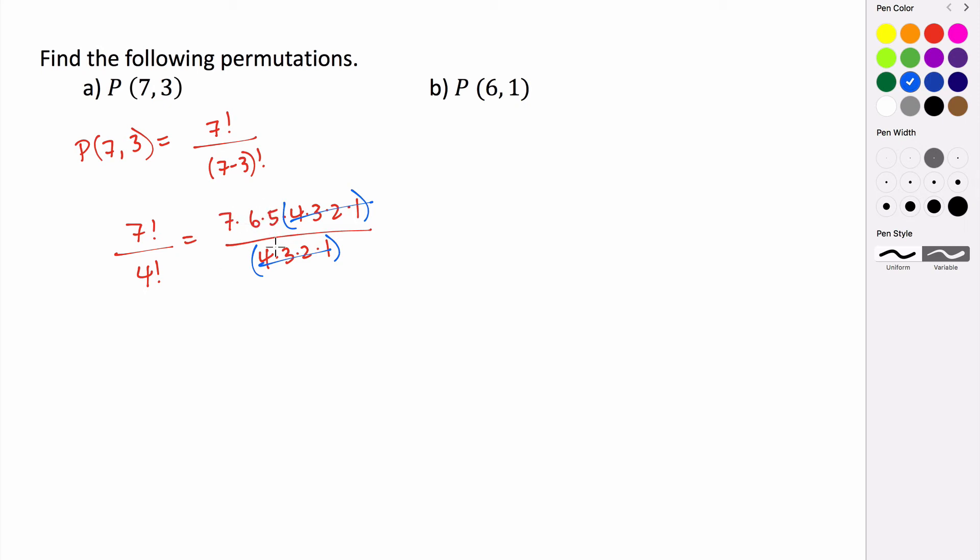So this is equal to 7 times 6 times 5. 6 times 5 is 30, 30 times 7 is 210. So the permutation of 7 taken 3 at a time is 210.